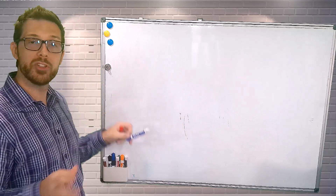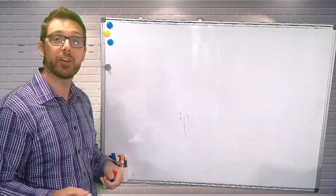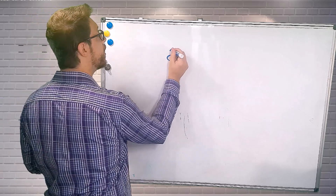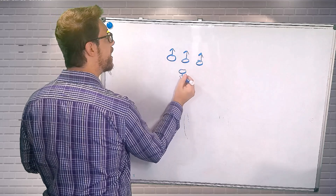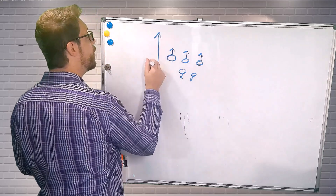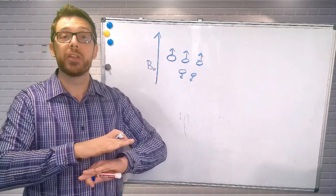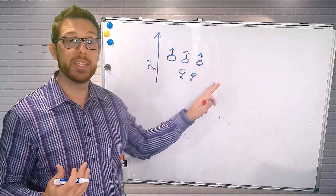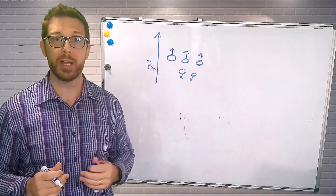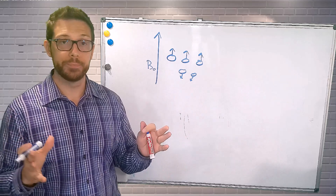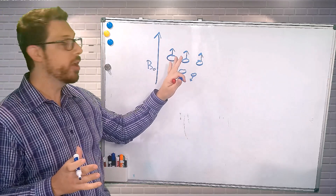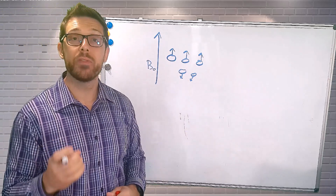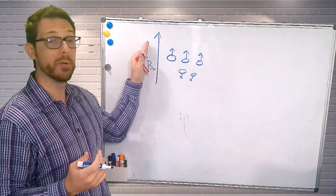We're going to start by taking our patient and putting them into the scanner. We're going to go ahead and align those hydrogen protons parallel and anti-parallel with our B0. At this point, we have done nothing to our patient besides slide them into the scanner. We magnetized our patient and created organization in this chaos of hydrogen pointing in all different directions. We align them and they're all precessing at the same rate. We always have more protons pointing parallel with B0 than against it.